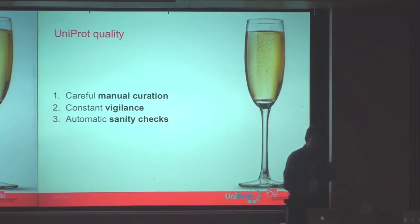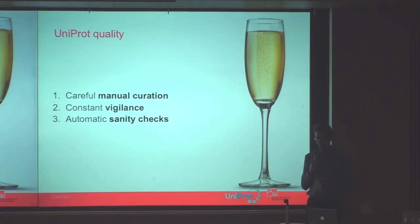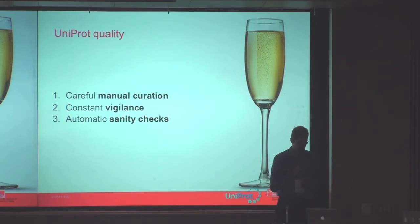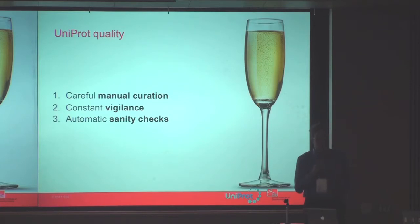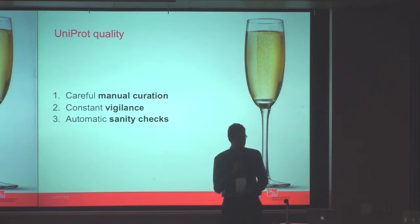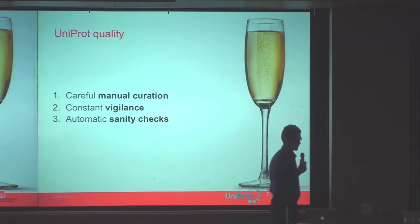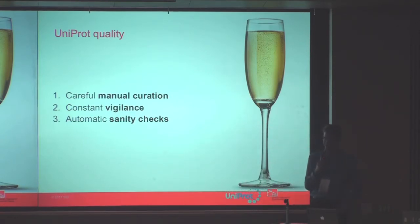Quality starts with careful manual curation — experts who know about the biology of proteins who carefully curate information for other users. We have to pay attention all the time to make sure what we wrote yesterday is still true today, because knowledge moves. To help all these people, we run many sanity checks — basically like the spell checker in Microsoft Word, which puts a squiggly line under every word. Of course, like every biologist, you use lots of jargon and get lots of red lines for common words.